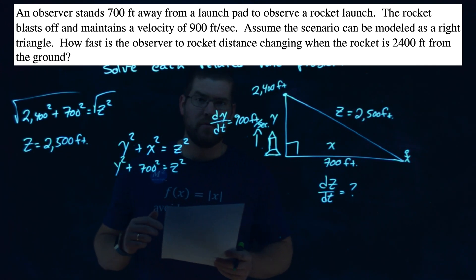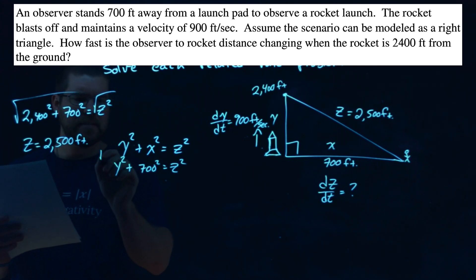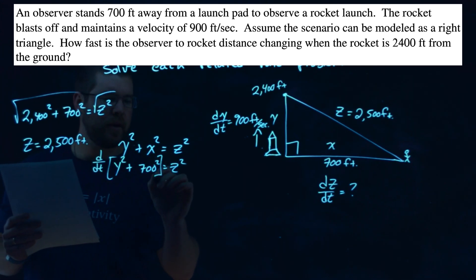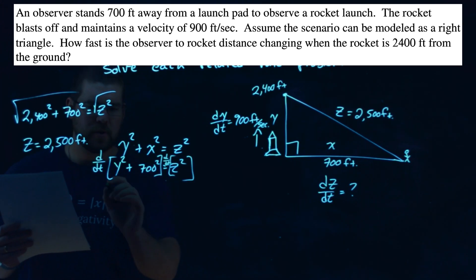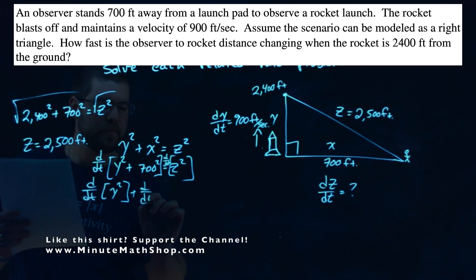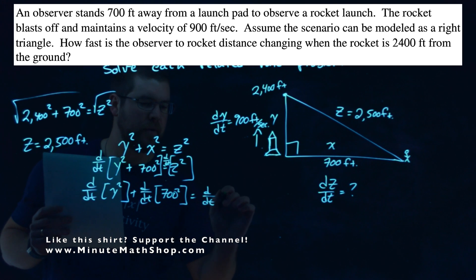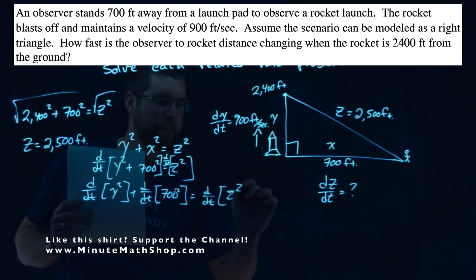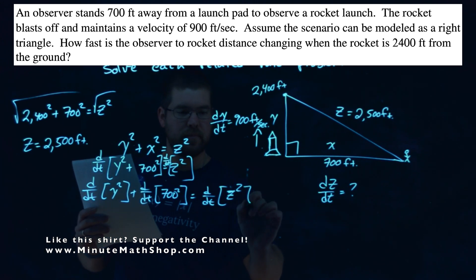Now, I'm going to derive both sides with respect to time. So to do that, I have my d/dt of what I got going on here. Let's re-write that. So we have d/dt, let's do each part here, of Y squared plus d/dt of 700 squared equals d/dt of Z squared. So many little things going on.